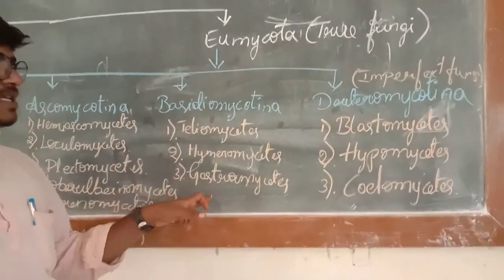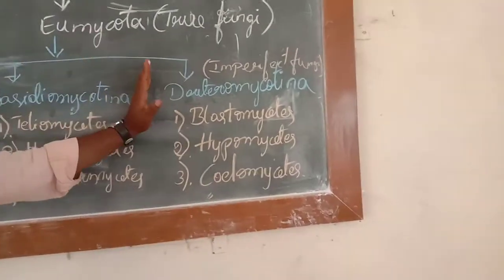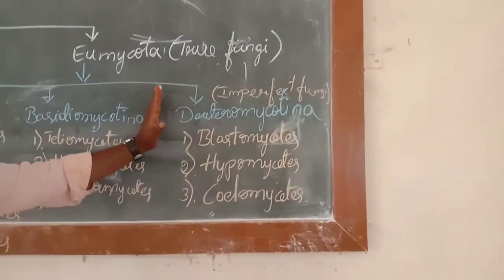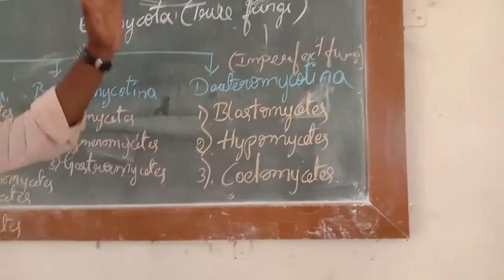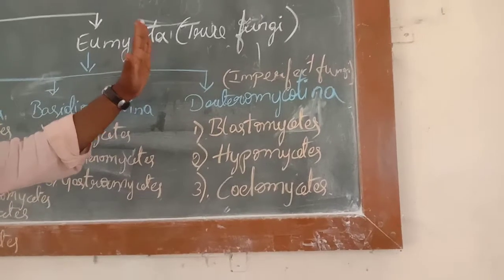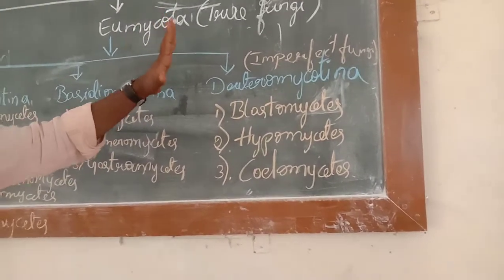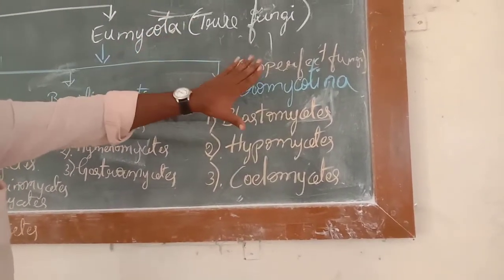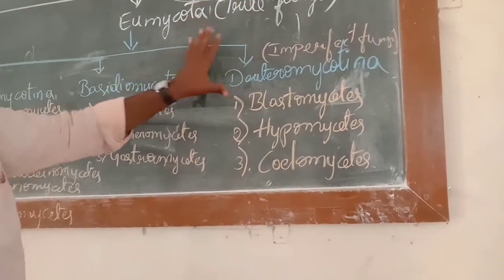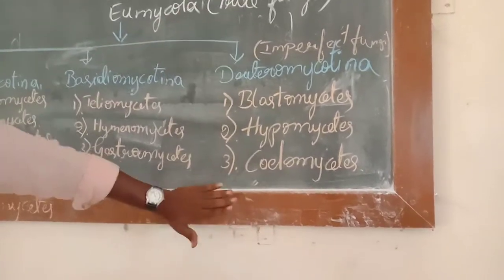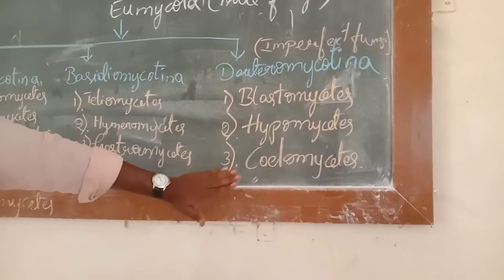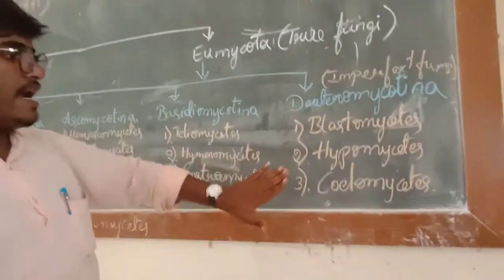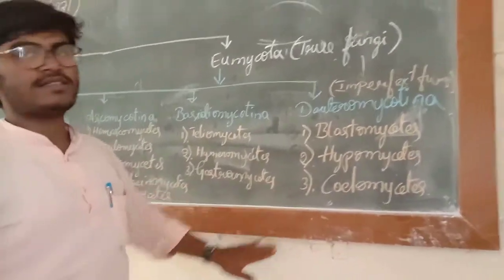The final subdivision is Deuteromycotina, which is imperfect in nature because no proper type of sexual reproduction has been identified. Hence it is kept separately as imperfect fungi. Deuteromycotina is further divided into three classes: Blastomycetes, Hyphomycetes, and Coelomycetes.